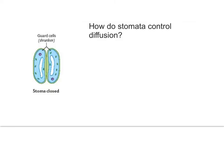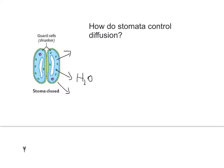The stomata are very important in controlling the amount of gases that can diffuse in and out of the leaf. At night, the stomata are closed. This is because water leaves the guard cells by osmosis down a water potential gradient from the guard cell into the rest of the leaf, making the guard cells flaccid and the stomata close. In the day, however, light is used to make ATP, which is used for active transport. Ions are pumped into the guard cells, lowering the water potential inside the guard cell. Water then moves into the guard cell by osmosis, making the guard cells swell up, and as they swell up they bend, opening the stomata.